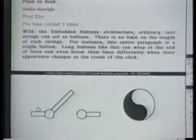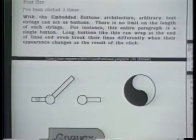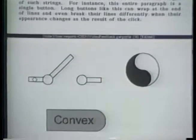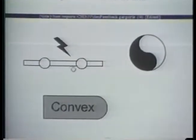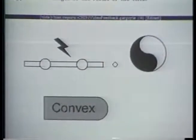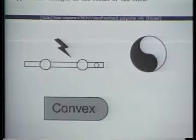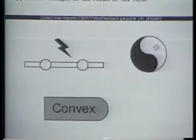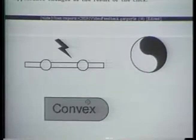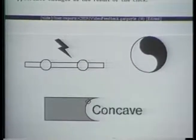In the Gargoyle Graphics Editor, buttons can use graphical editing operations to display feedback. For instance, when we click on this electrical switch, it repositions its parts. This button changes color. And this button changes both its shape and label.